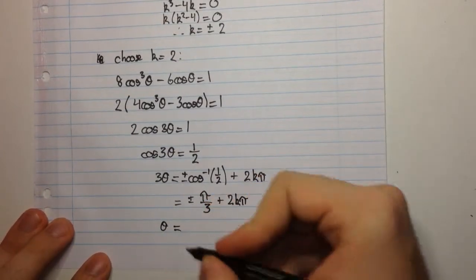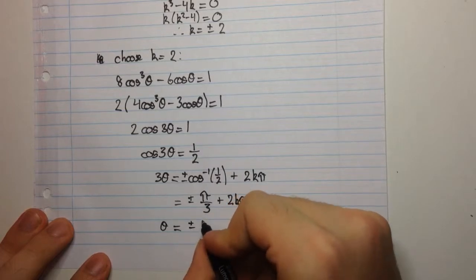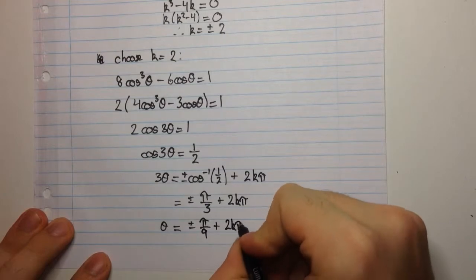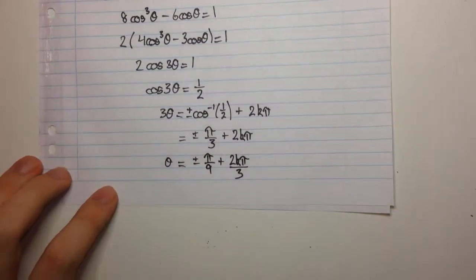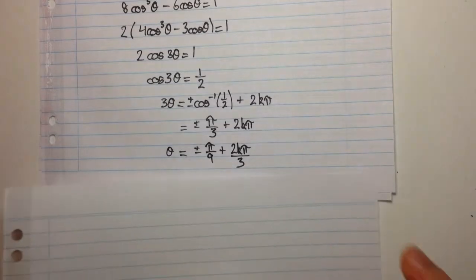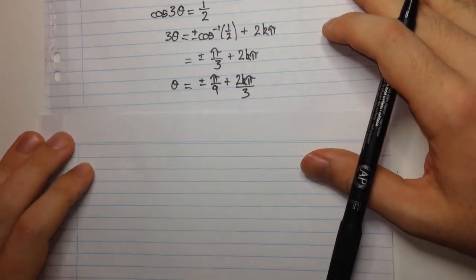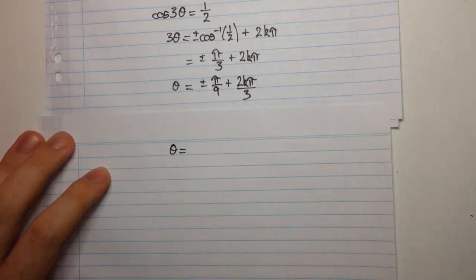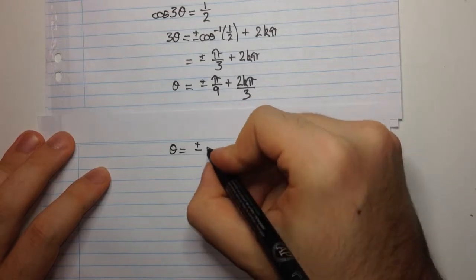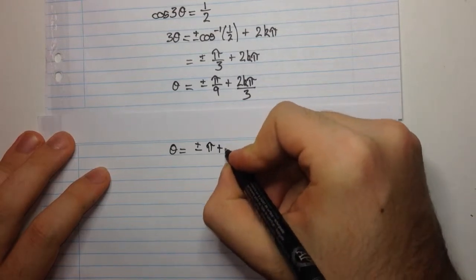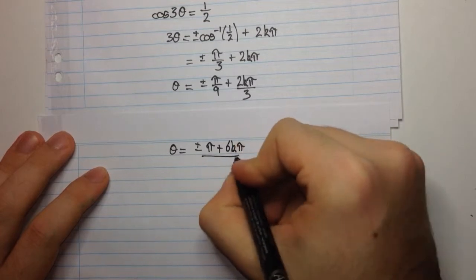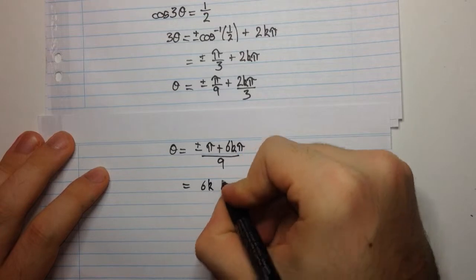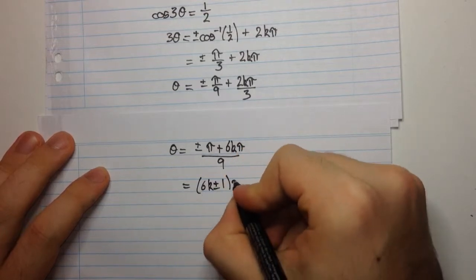Alright, let's solve for θ now. So we're going to have θ equals plus or minus π over 9, plus 2kπ over 3. So, let's maybe write this a little bit neater. Get a common denominator, plus or minus π plus 6kπ over 9. And we can factor out a π and get (6k plus or minus 1) times π over 9.